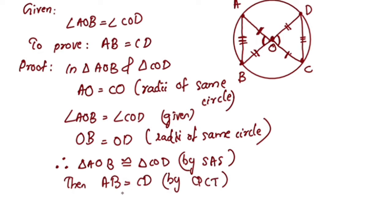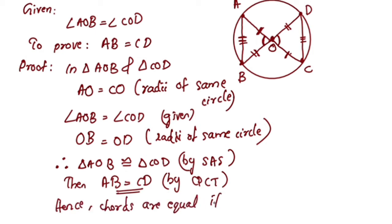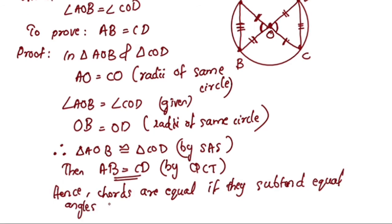Hence, AB is equal to CD by CPCT. The chords are equal if they subtend equal angles at the center. This completes the proof of the converse theorem.